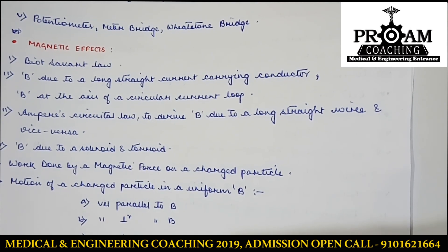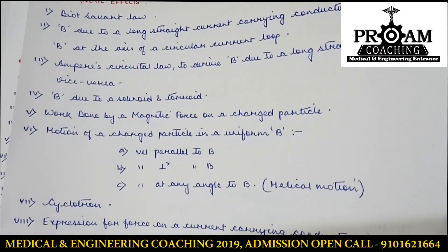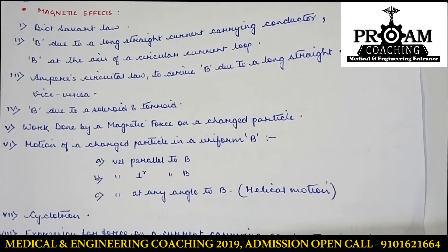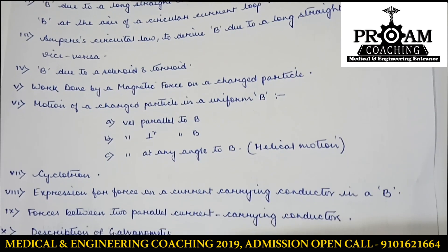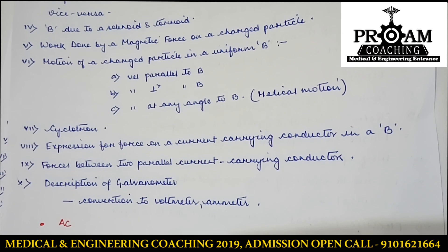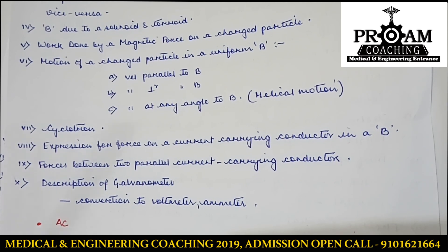In magnetic effects, we have topics starting from the Biot-Savart law and ending at the galvanometer. The principle used for the galvanometer, the conversion of galvanometer to voltmeter, and subsequently to ammeter — what connections are used and how the conversion is done — you should study all of this. Note that magnetism has been kept outside this sheet.